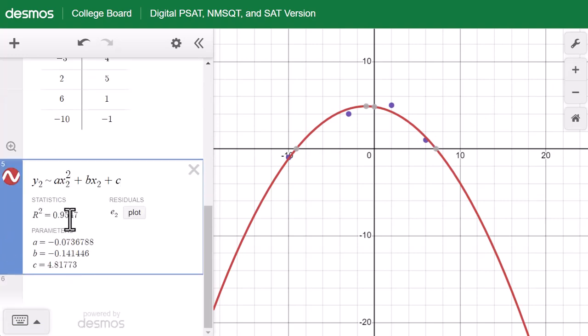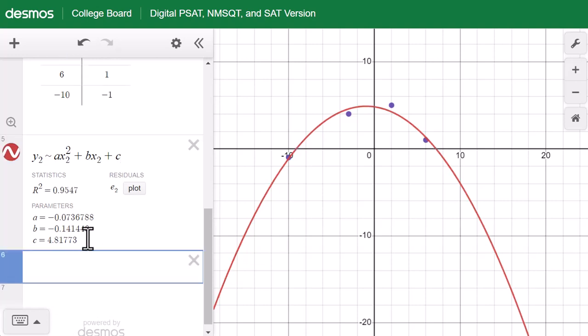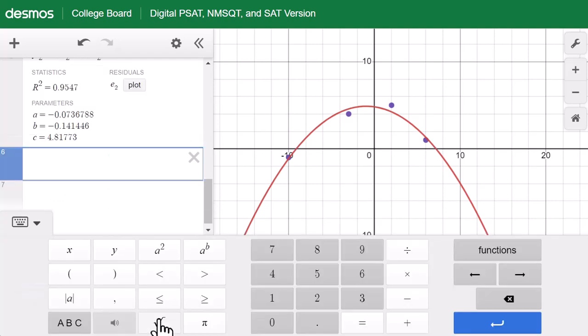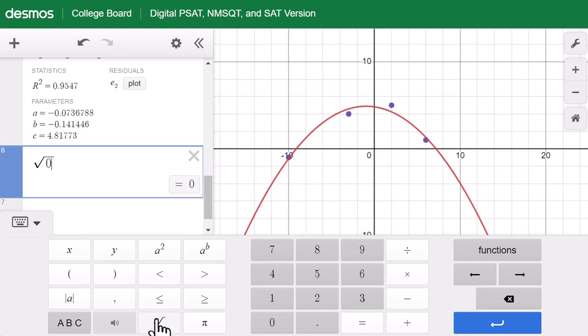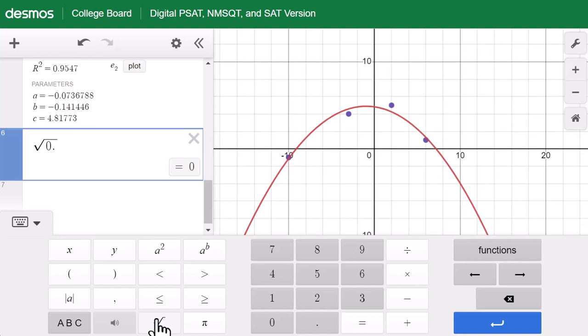Correlation coefficient square equals 0.9547. You can figure out this r by square root. This is the square root, 0.9547.